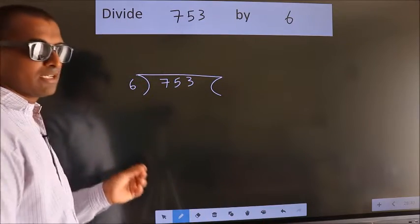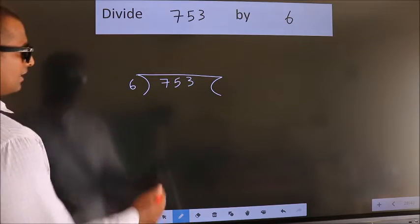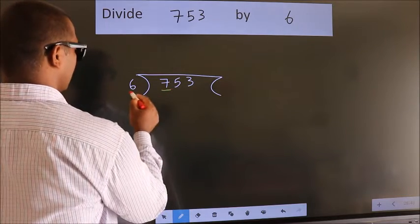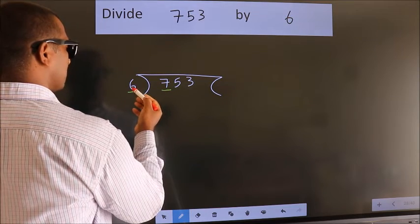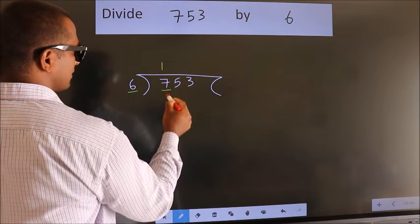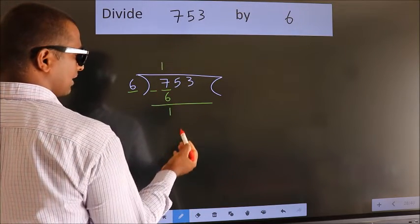This is your step 1. Next, here we have 7, here 6. A number close to 7 in 6 table is 6 ones, 6. Now we should subtract. We get 1.